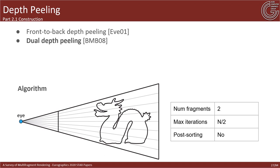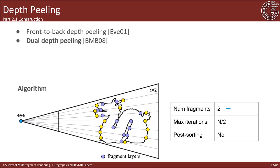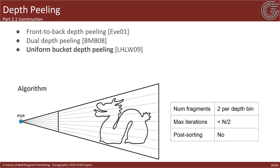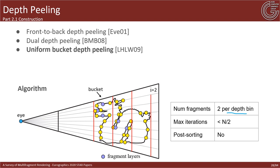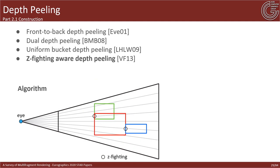The dual depth peeling method captures bidirectionally both the nearest and furthest fragments with respect to the camera in each iteration, reducing complexity in half by applying front-to-back and back-to-front depth peeling simultaneously. It was later extended to extract two fragments per depth bin in each iteration, reducing necessary iterations even further. Each depth bin corresponds to a uniformly divided interval of the pixel depth range. Depth peeling methods are susceptible to z-fighting artifacts when two or more fragments in the same pixel have similar depth values, and a number of solutions were proposed to mitigate these depth coplanarity issues.